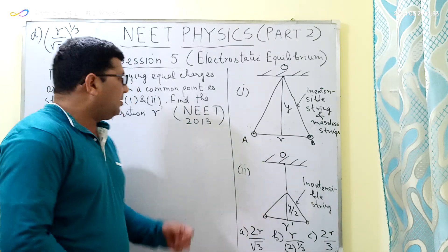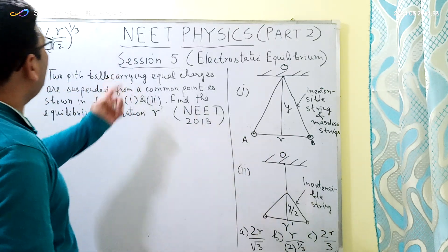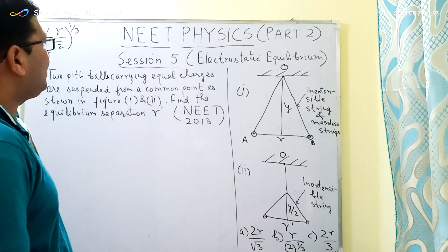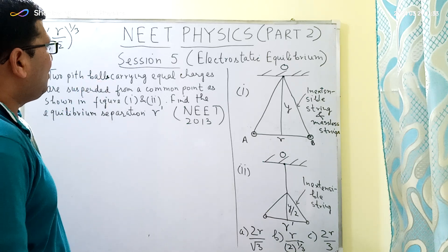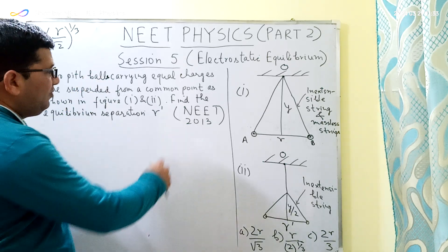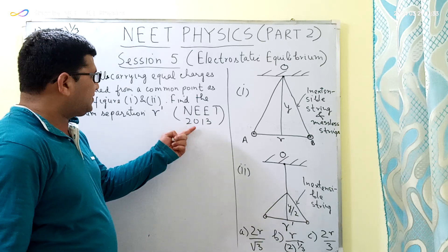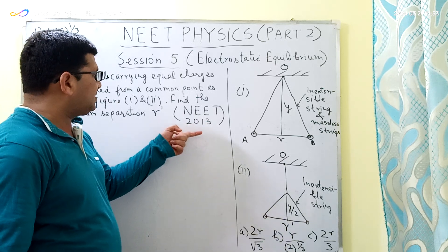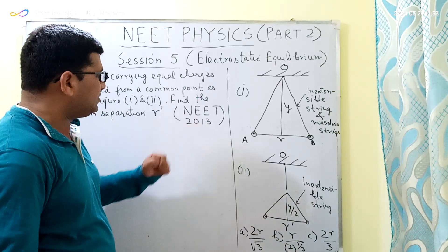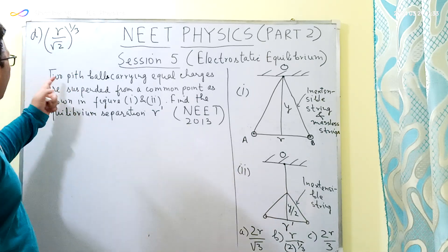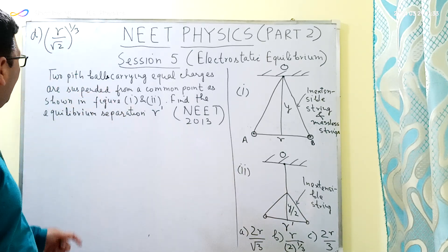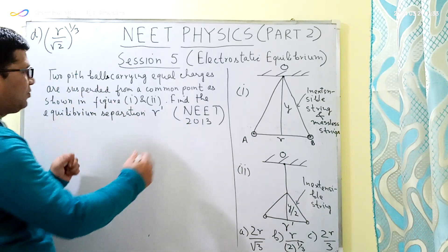Good morning students. This is session 5 from the playlist of NEET Physics Part 2. The topic is electrostatic equilibrium, and I've taken one question for this session which was asked in the NEET examination in 2013. The question is: two pit balls carrying equal charges are suspended from a common point as shown in the figure.